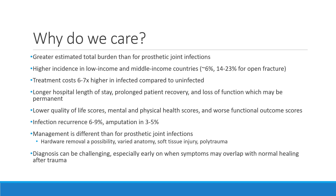FRIs are estimated to have a greater total disease burden than prosthetic joint infections. There is a higher incidence in low- and middle-income countries, accounting for about 14 to 23 percent of open fractures. Treatment costs are many-fold higher in infected fractures compared to uninfected ones. Having an FRI is associated with longer hospital length of stay, prolonged recovery, and loss of function which may be permanent. Patients with FRIs also have lower quality of life scores and the worst functional outcome scores. When FRIs are established, recurrence rates are high, occurring in six to nine percent of patients after treatment, with amputations required in three to five percent.